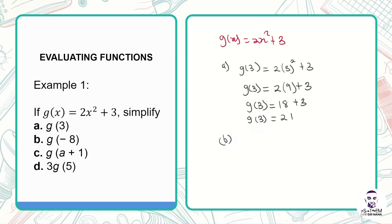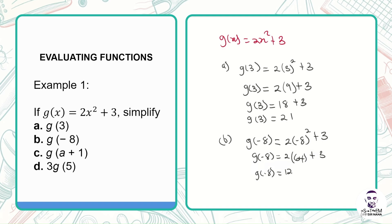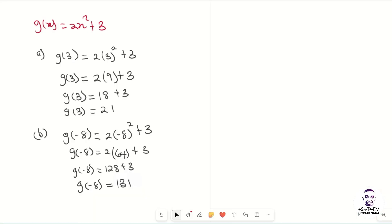In the next question we must evaluate g of negative 8. We do the same — wherever we see x we put negative 8. So we have 2 multiplying negative 8 squared plus 3. Negative 8 squared gives us 64, so g of negative 8 equals 2 multiplying 64 plus 3, which is 128 plus 3. So g of negative 8 equals 131. That implies domain negative 8 in the function 2x squared plus 3 gives us 131.